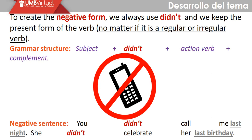To create a negative sentence, we always use 'didn't' and keep the present form of the verb, no matter if it is a regular or irregular verb. So to form negative sentences in simple past, we always use 'didn't,' which gives the tense connotation — it's not necessary to put the following verb in past, but in present. Examples: 'You didn't call me last night.' 'She didn't celebrate her last birthday.'